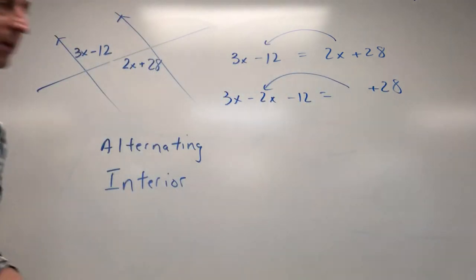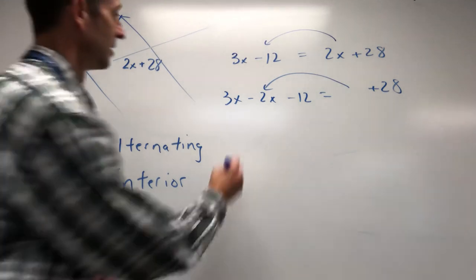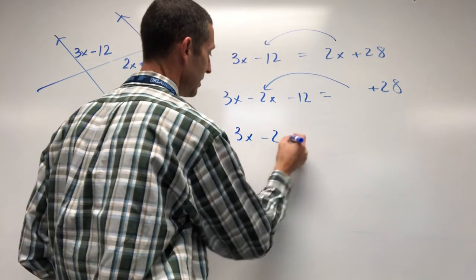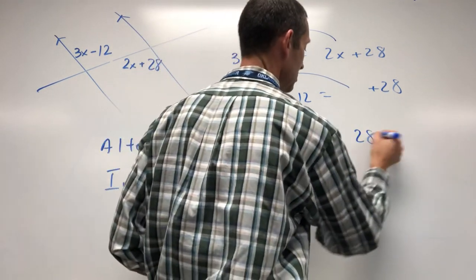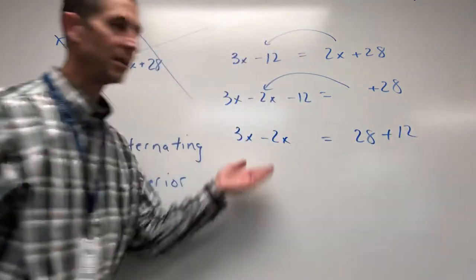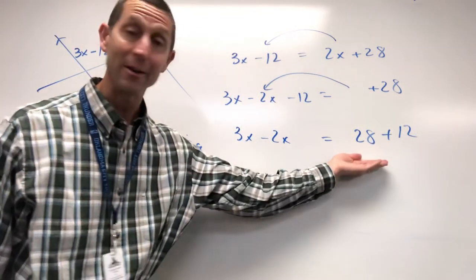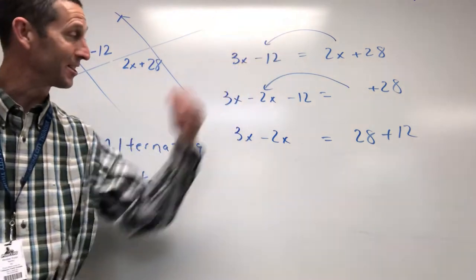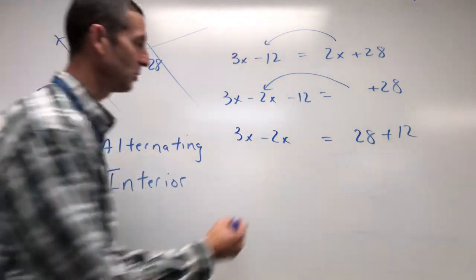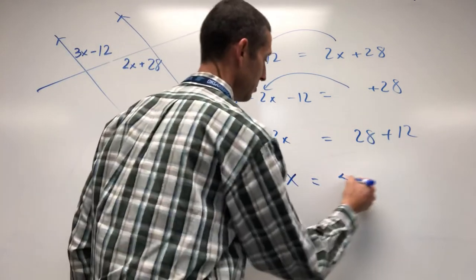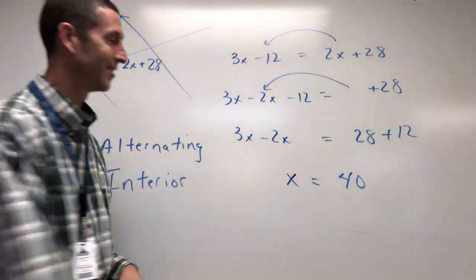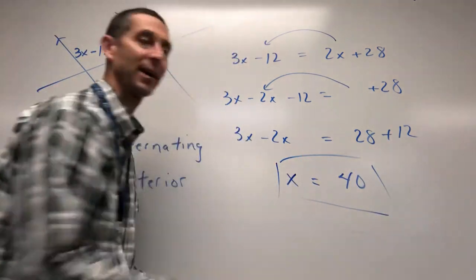So we grab the 2x, get it on one side. Let's subtract it. Let's add the 12. So now you've got your x's together. You've got your numbers together, like terms together. Oh, look at that. 3x minus 2x. There's x right there. 28 plus 12, that's 40. And just like that, you've solved for x.